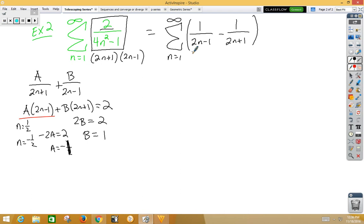Let's start plugging in numbers. Starting with n=1, we get 1 - 1/3. Plugging in n=2, we get 1/3 - 1/5.